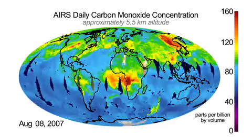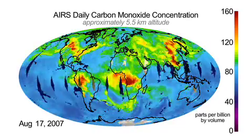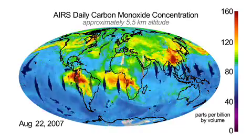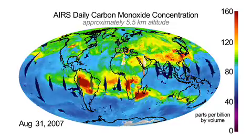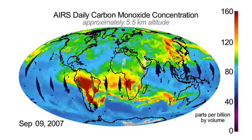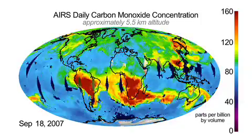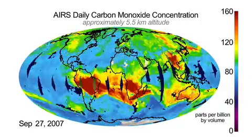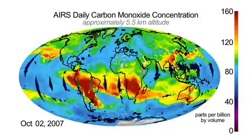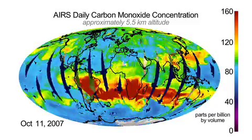The AIRS carbon monoxide retrievals are mapped in color over the Blue Marble background picture of the Earth. The diamonds marching across the globe represent areas of missing data in the gaps between orbits. Longer stripes of missing data occur due to satellite maneuvers.